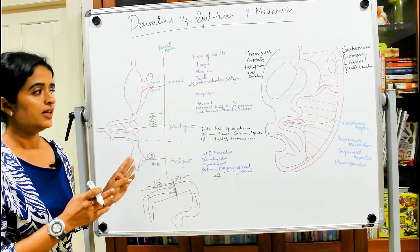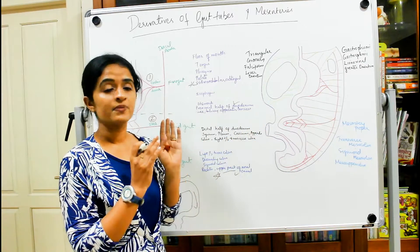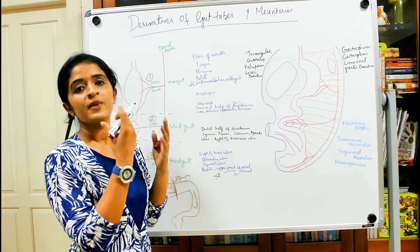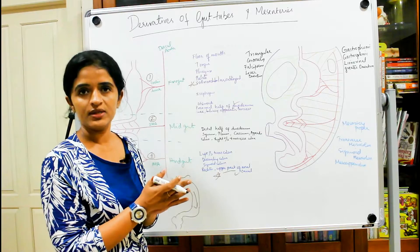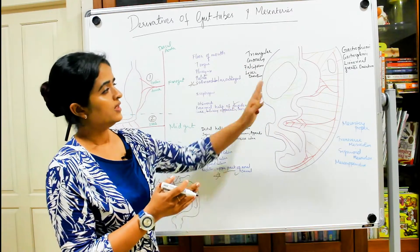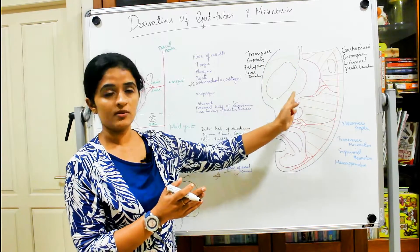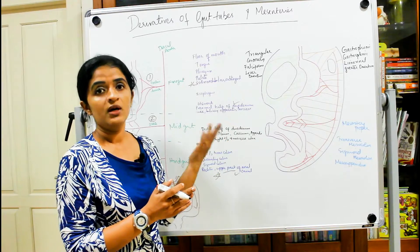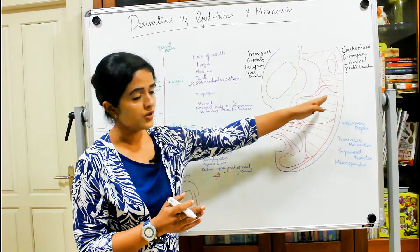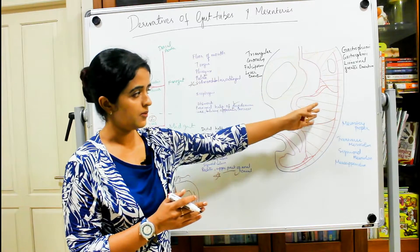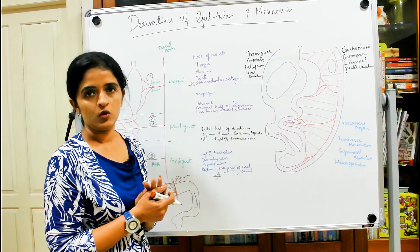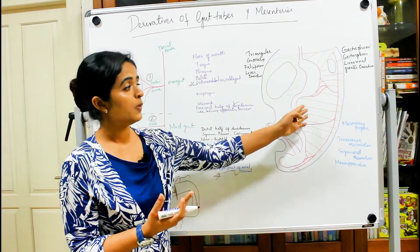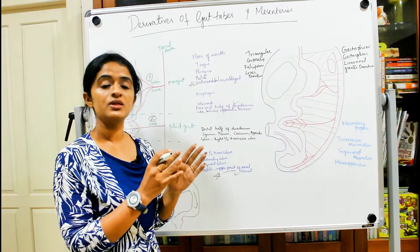Now about the mesentery — it is the mesoderm which suspends the entire gut tube within the body of the embryo. The ventral mesogastrium is confined to the stomach and a small portion of the upper duodenum, whereas the rest of the gut tube does not have a ventral mesentery. Posteriorly, the mesentery suspends the entire gut tube onto the posterior abdominal wall. Later, many portions of this mesentery will disappear, which is how some organs become retroperitoneal.